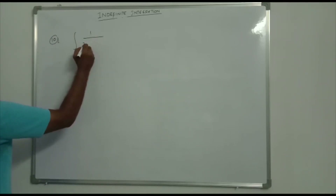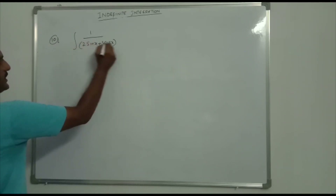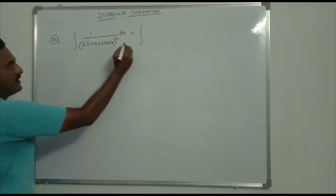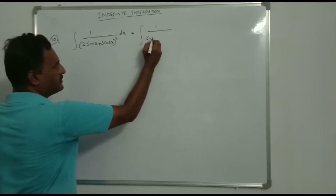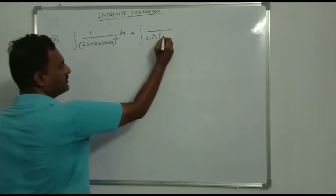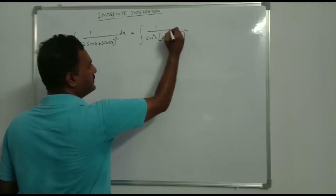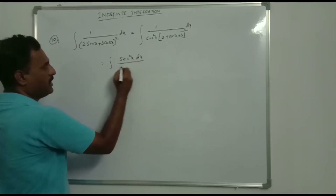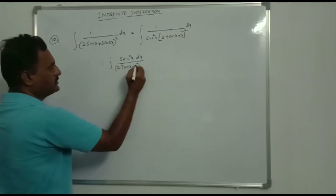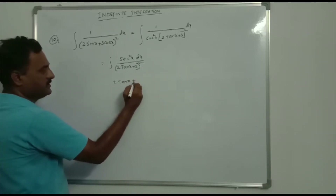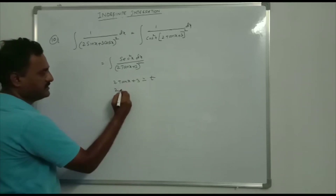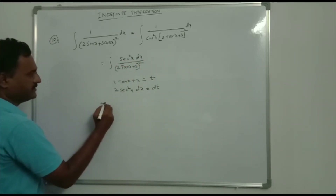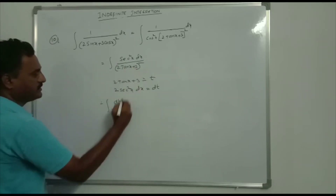Integration of 1/(2 sin x + 3 cos x)² dx. Take cos x common from the denominator: cos²x · (2 tan x + 3)² in the denominator. So 1/cos²x is sec²x, giving integration of sec²x dx/(2 tan x + 3)². Let t = 2 tan x + 3, so 2 sec²x dx = dt, meaning sec²x dx = dt/2.